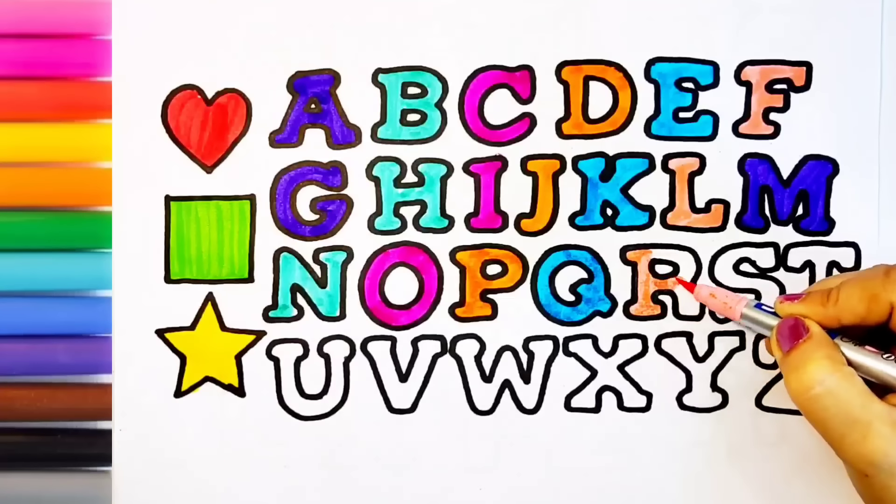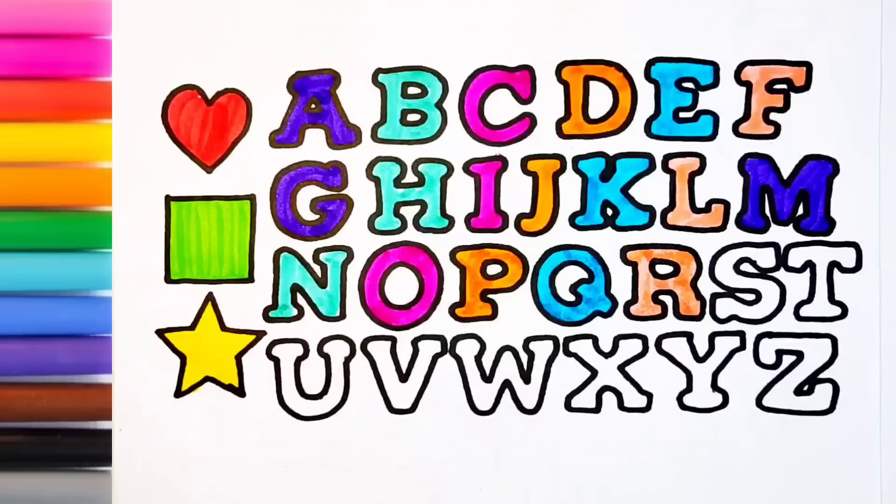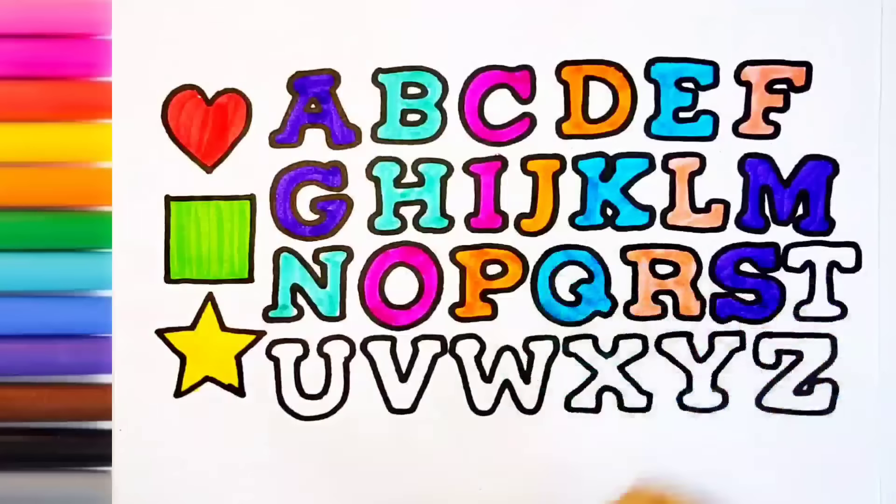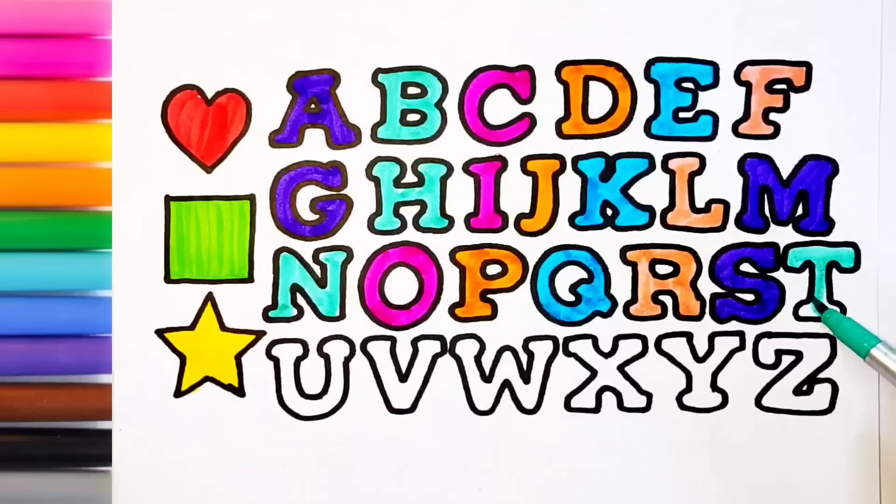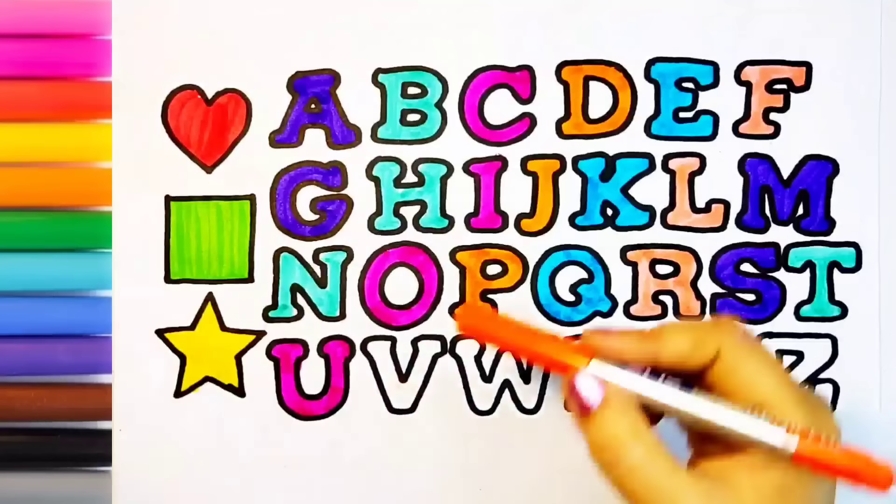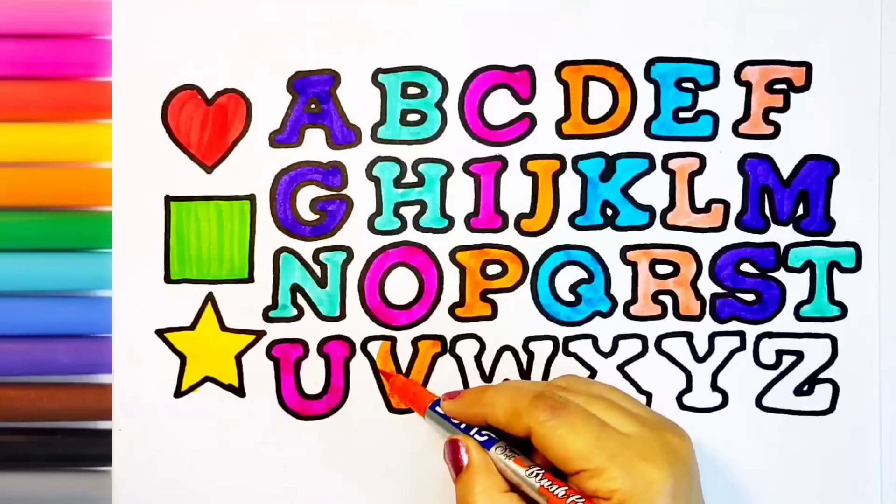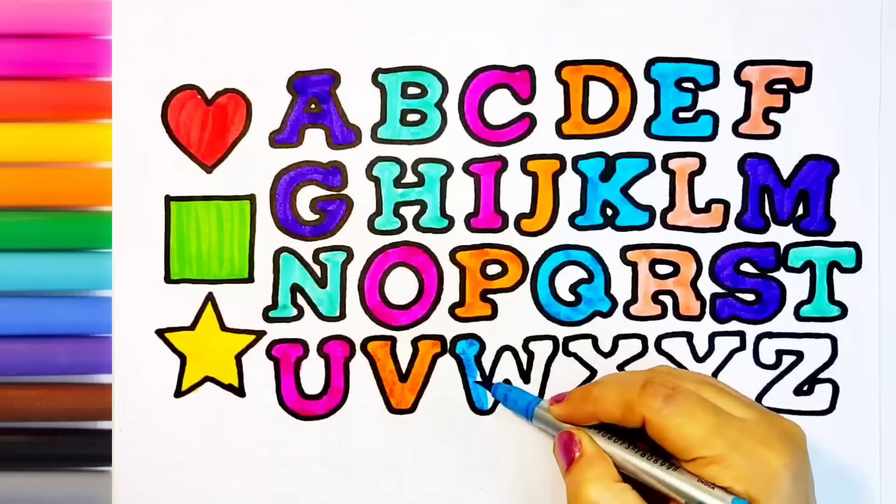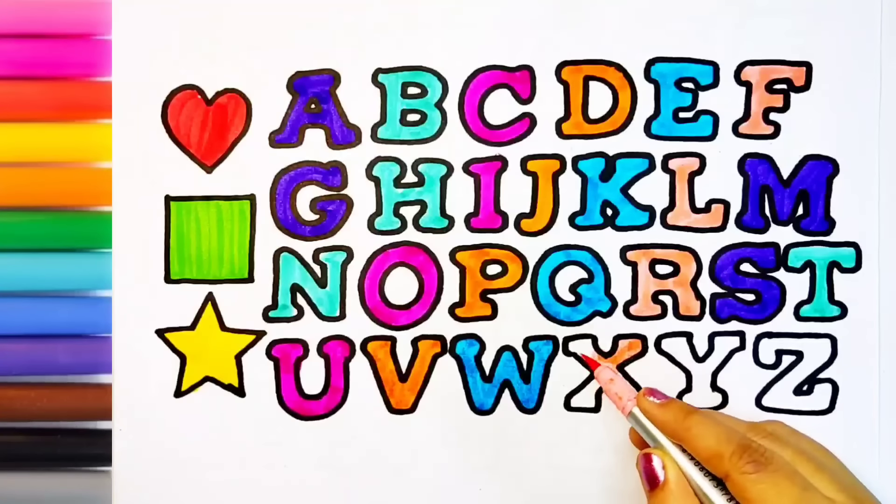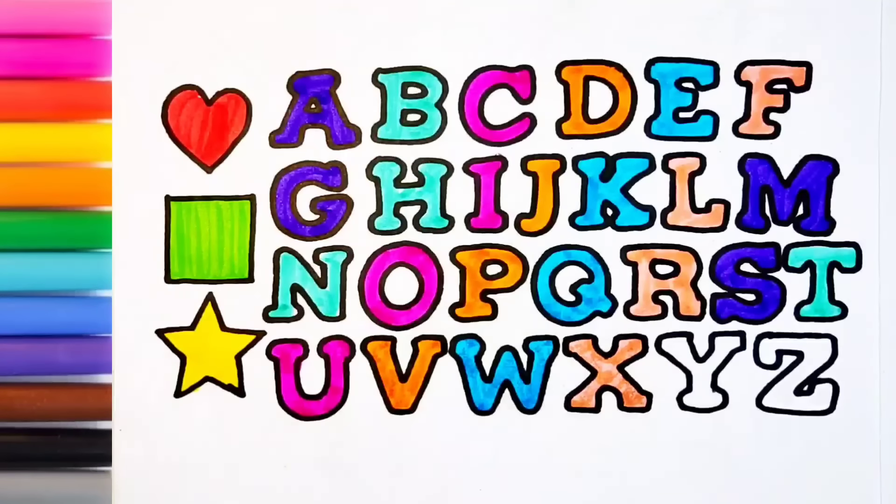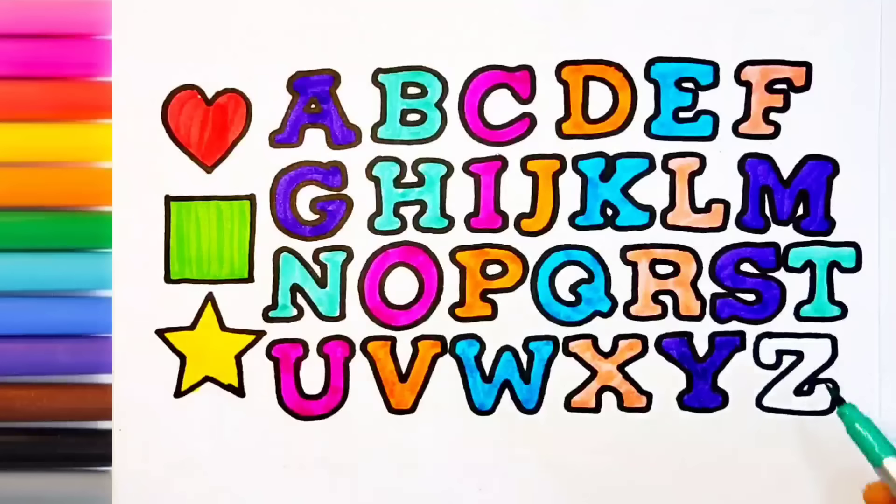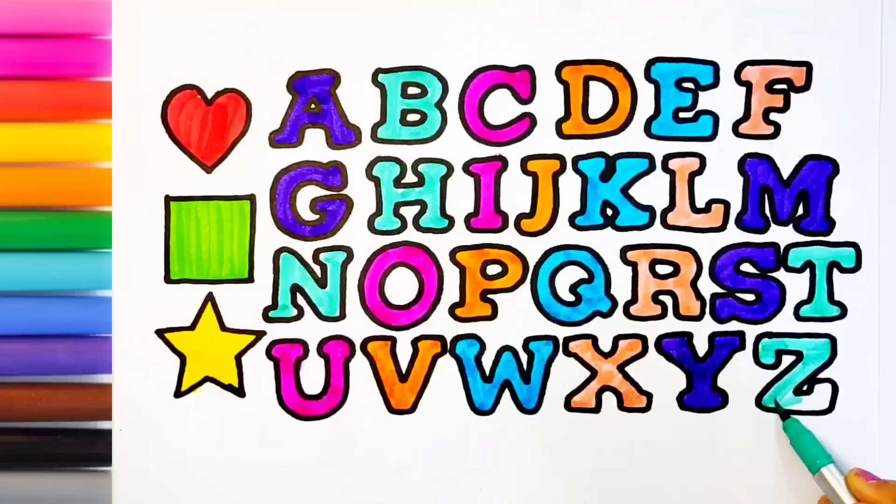Q, pink color. R, purple color. S, sea green color. T, pink color. U, V, W, X, Y, Z. Now I know my ABCs. Z, orange color. V, sky blue color. W, pink color. X, purple color. Y, sea green color. Z.